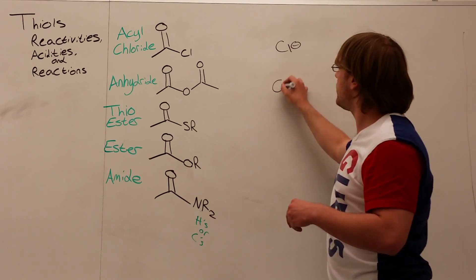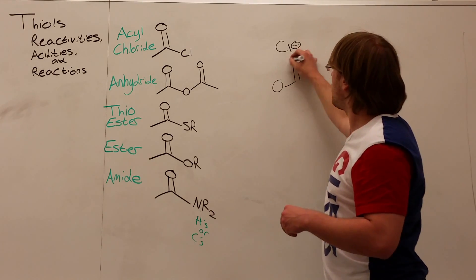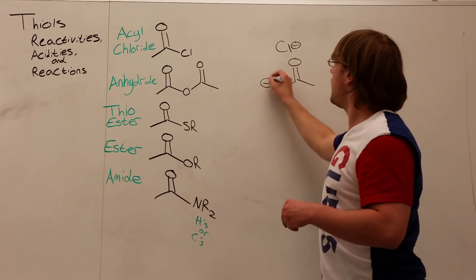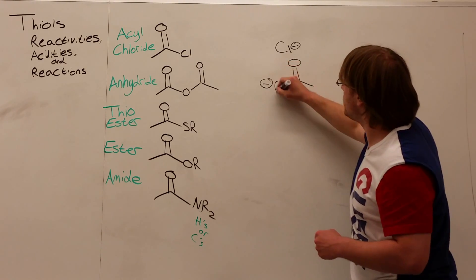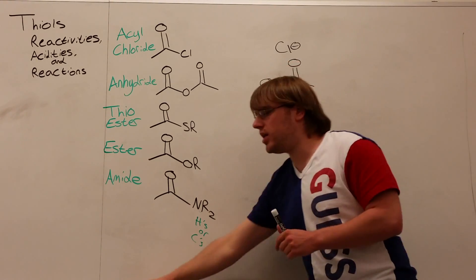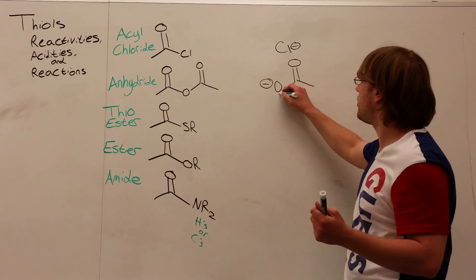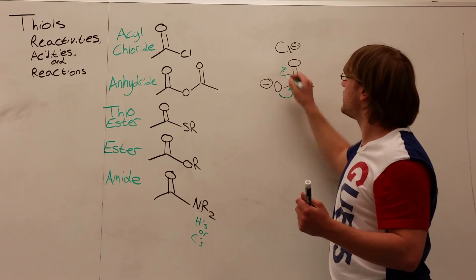The next most stable we'll find is in the anhydrides leaving group, a carboxylate, meaning a carbonyl with an O minus on it. Why is this stable? Because the O minus is capable of resonating with the carbonyl that pops off along with it. So it's nice and stable.